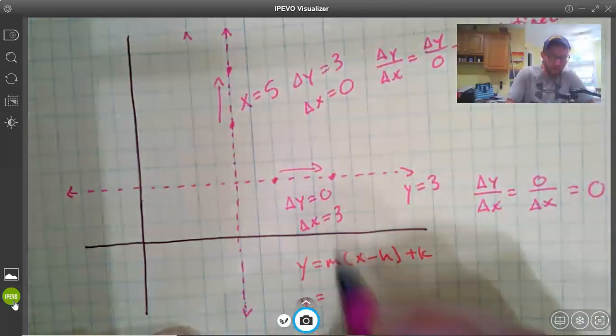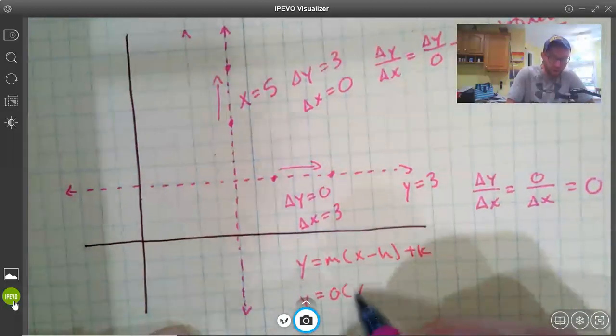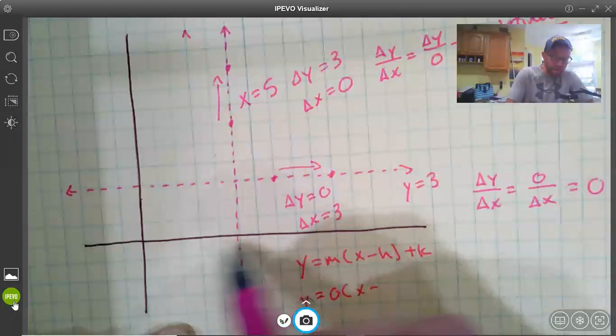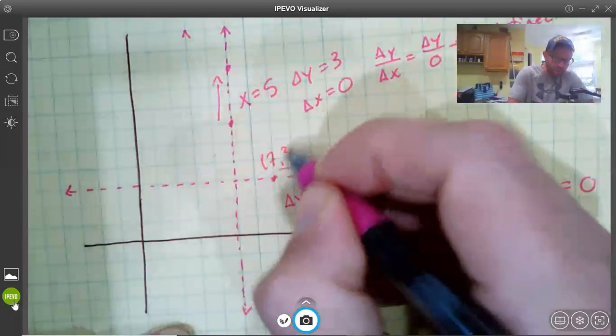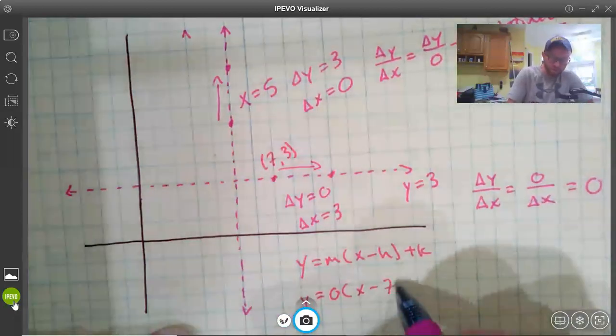y equals 0, x minus, let's see, 1, 2, 3, 4, 5, 6, 7, 1, 2, 3, we'll choose this point, 7, 3, plus 3.